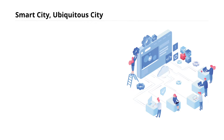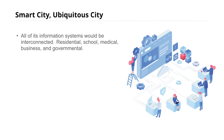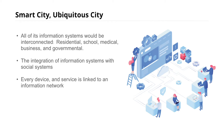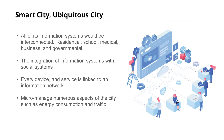Another term related to smart cities is ubiquitous city. A ubiquitous city connects all information systems together — residential, school, medical, business, and government. Another definition is when we integrate information systems with social systems. Essentially, every device and service is linked to an information network, allowing city planners and managers to micromanage numerous aspects of cities, from energy consumption to traffic.